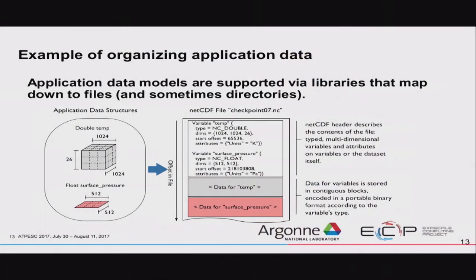To give a quick example: Rob will be talking about parallel NetCDF later. This shows a layout from a simulation that has temperature in a three-dimensional array and surface pressure in another array. If you store this in NetCDF, you have a file format defined for you with a header telling you the variable types, sizes, and dimensions. This does two things: the file is self-describing and portable — someone ten years from now can open a parallel NetCDF file and find out what's in it — and the data is organized in a way that's efficient for I/O on these machines.